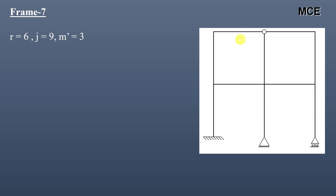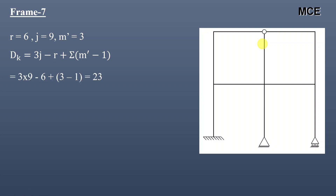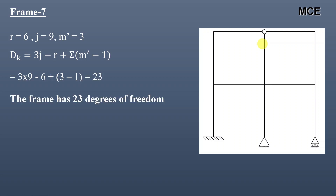For frame 7, this frame has 6 reactions, 9 joints, and 1 internal hinge. The number of members meeting at this internal hinge is 3, so m′ = 3. The value of DK is equal to 23, meaning this frame has 23 degrees of freedom. If members are taken as inextensible, DK = 23 − 10 = 13.